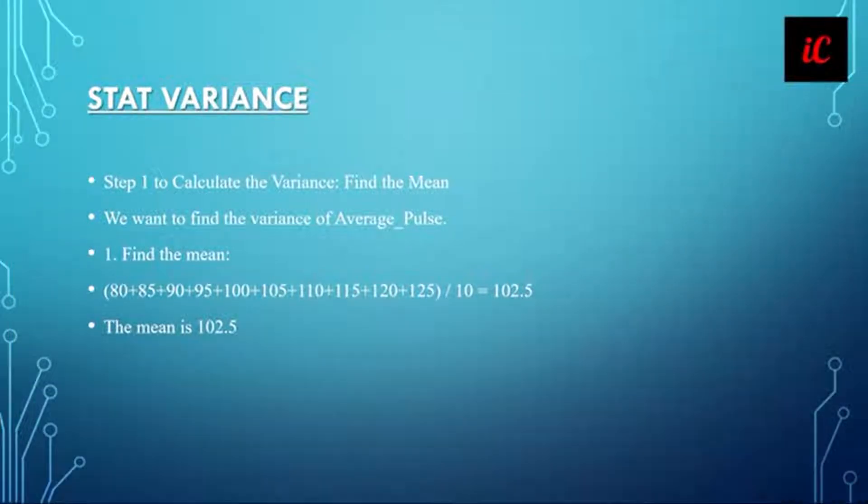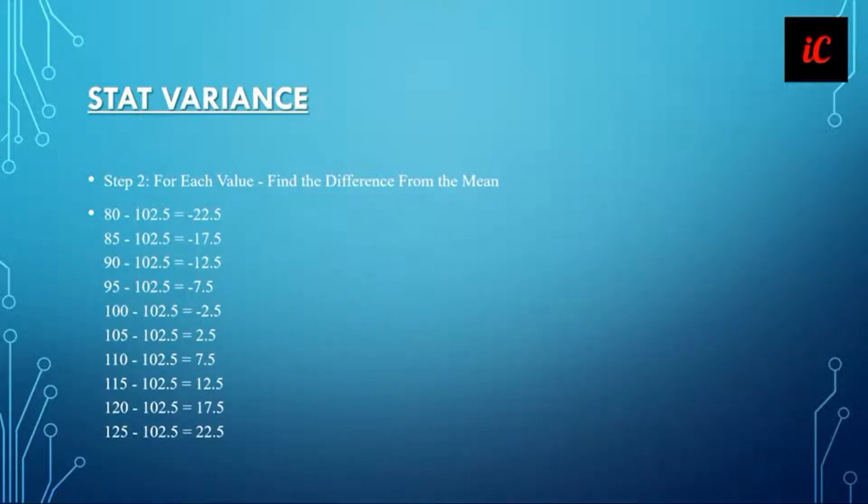The first step to calculate the variance is to find the mean. We want to find the variance of average pulse. Here I have given the array and will divide by 10. The mean is 102.5.